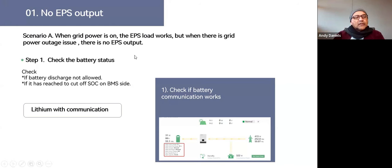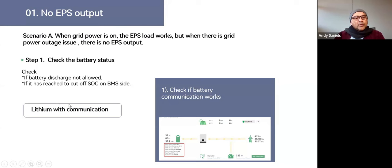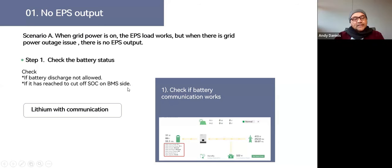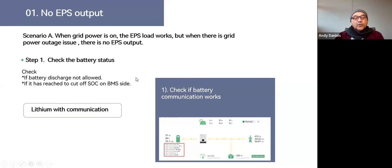The first thing we're going to do is look at the battery status. On the monitoring screen, the bottom left-hand corner shows battery information. This scenario involves a lithium battery connected with communication. First, you're going to check if battery discharge is allowed, and then look at the battery SOC on the BMS side. We'll need to jump into the settings, go to the maintenance page, and check the battery voltage — making sure the on-grid cutoff and off-grid cutoff are set to the desired values.